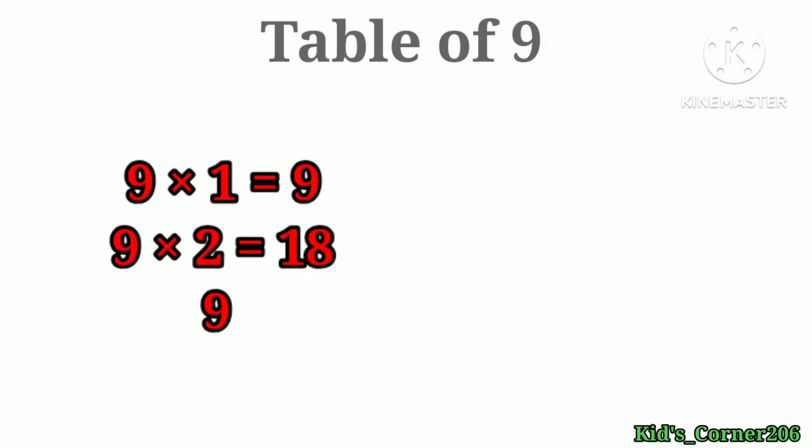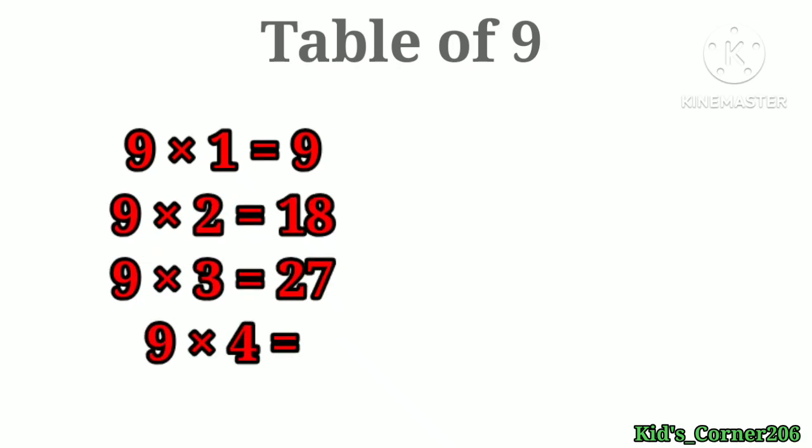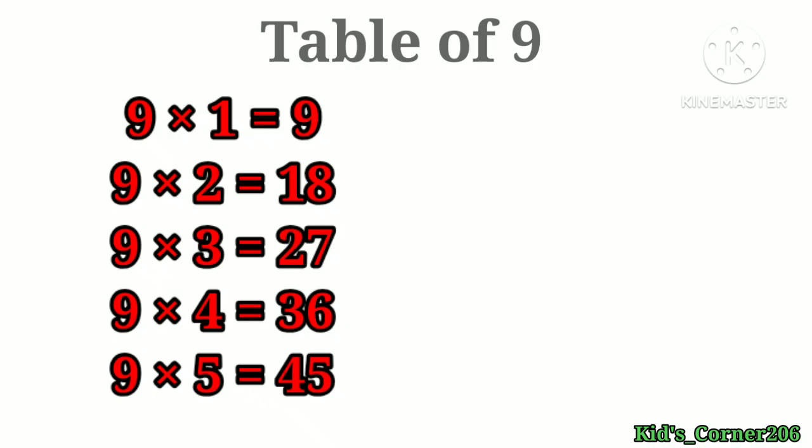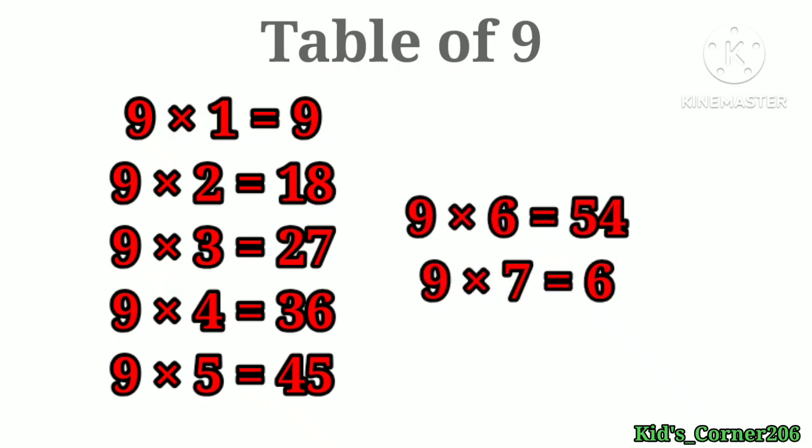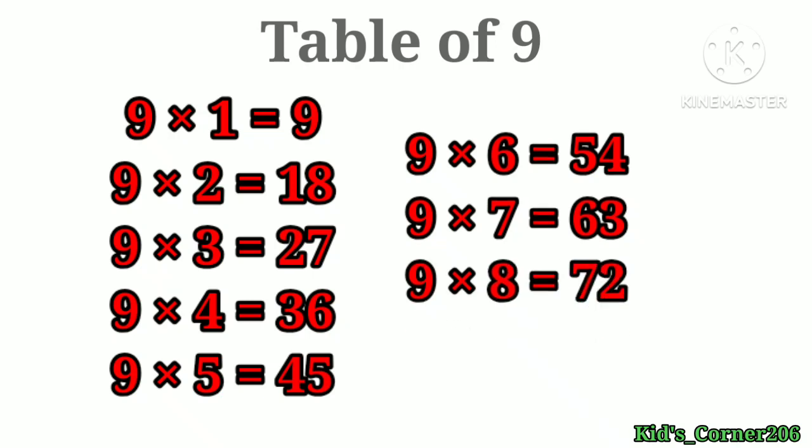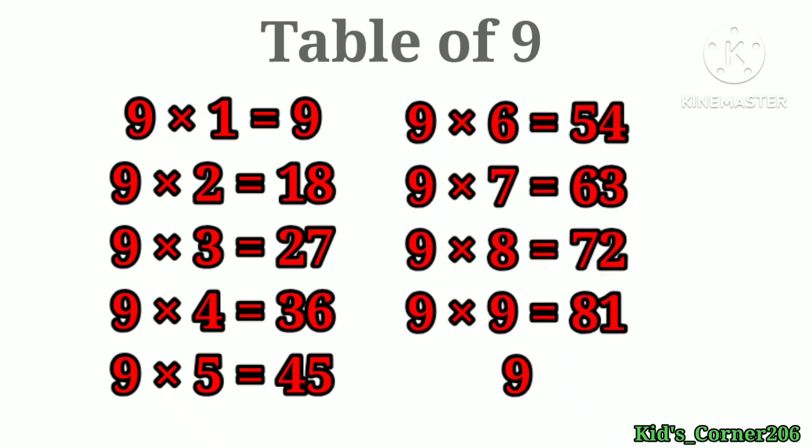Table of 9: 9×1=9, 9×2=18, 9×3=27, 9×4=36, 9×5=45, 9×6=54, 9×7=63, 9×8=72, 9×9=81, 9×10=90.